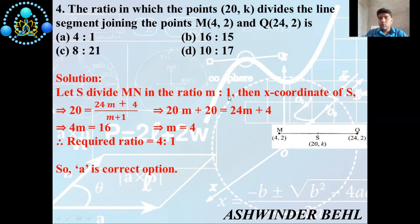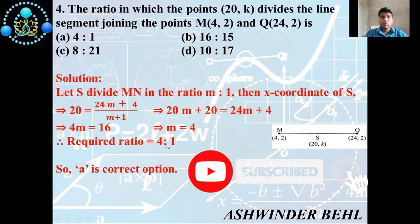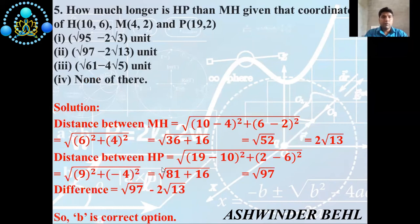With the help of this diagram, S divides MN in ratio m:1. Then the x-coordinate of S, which is 20, equals (24m + 4) / (m + 1). Solving: 20m + 20 = 24m + 4, so 4m = 16, giving m = 4. The ratio is 4:1, so option A is correct.